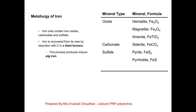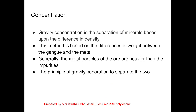From metal oxide, metal carbonate, and metal sulfide, we are going to remove pure iron — that process is called metallurgy of iron. The first process involved is crushing. Metal ore is available in the form of big stones, so first we crush that ore and grind it into fine powder.